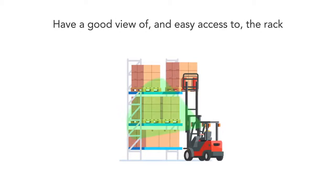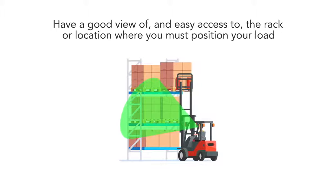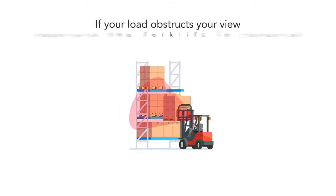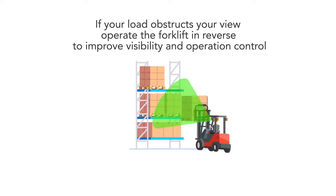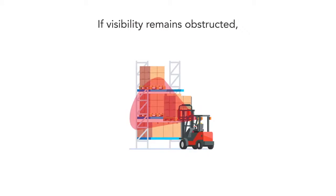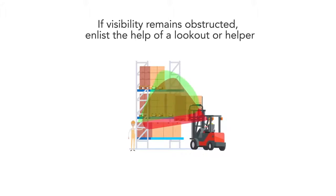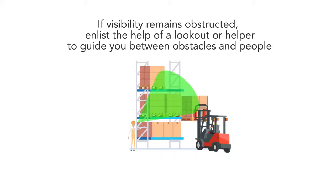Have a good view of and easy access to the rack or location where you must position your load. If your load obstructs your view, operate the forklift in reverse to improve visibility and operation control. If visibility remains obstructed, enlist the help of a lookout or helper to guide you between obstacles and people.